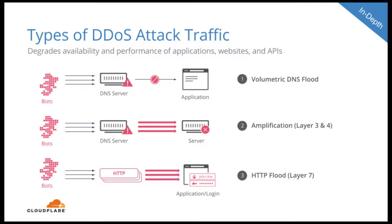This slide gives examples of the types of DDoS attacks. The important takeaway is that these attacks are layered — a DDoS can attack different parts of your infrastructure. For example, a volumetric DNS flood sends volumetric DNS queries against your DNS servers to make the DNS server, and therefore your application, unavailable.